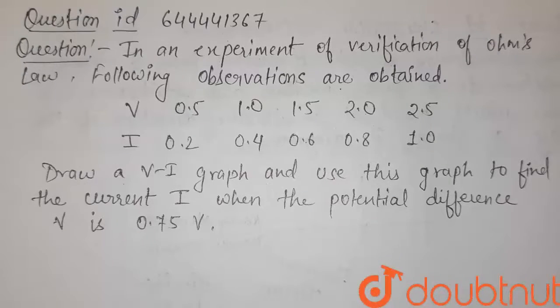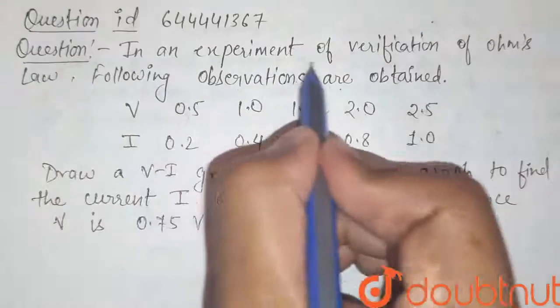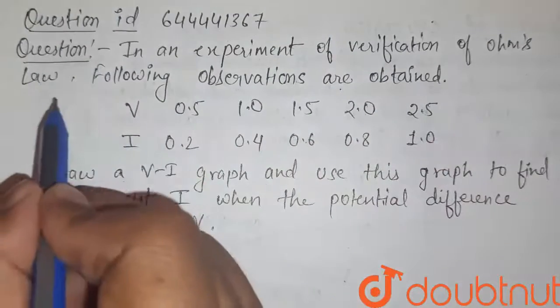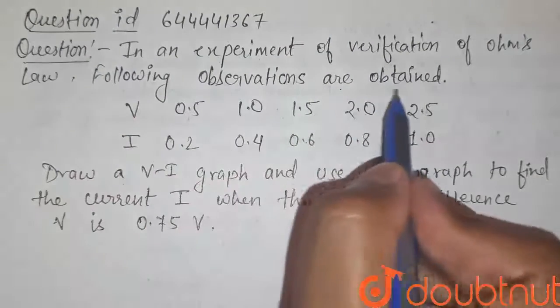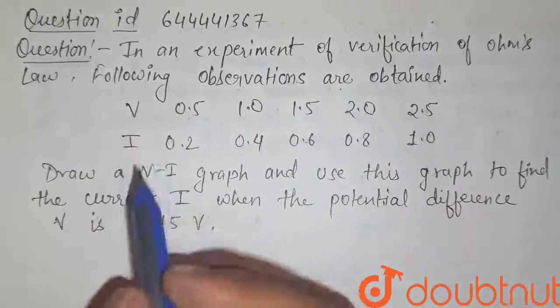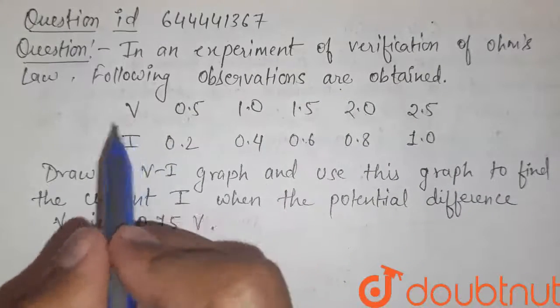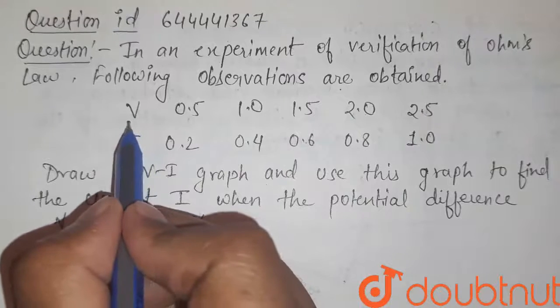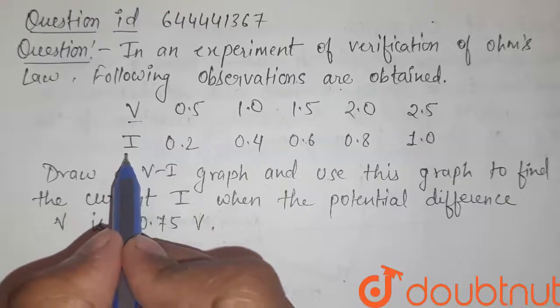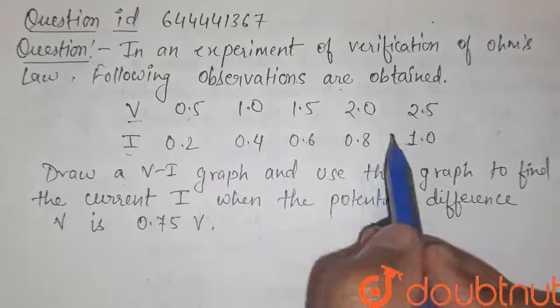Students, here is our question. In an experiment of verification of Ohm's law, following observations are obtained. So in an experiment to verify Ohm's law, we have certain readings of V (that is potential difference) and I (that is current). So these are readings.